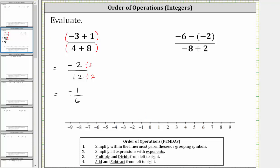Looking at the second expression, again, we can think of having parentheses around the numerator and denominator. In the numerator, we have negative six minus negative two. Subtracting a negative is equivalent to adding a positive, and therefore, we can write negative six minus negative two as negative six plus two.